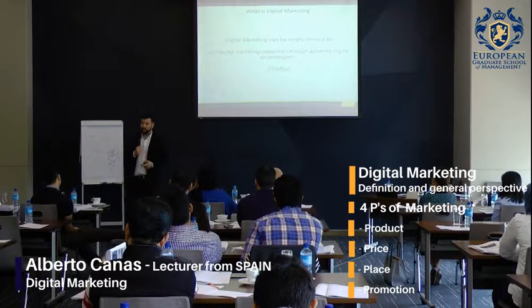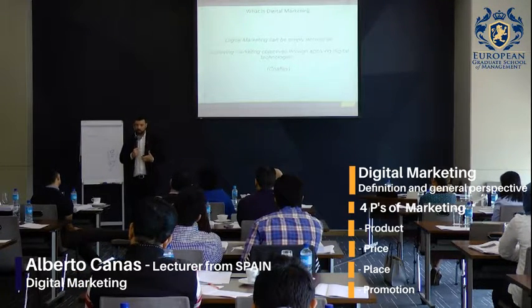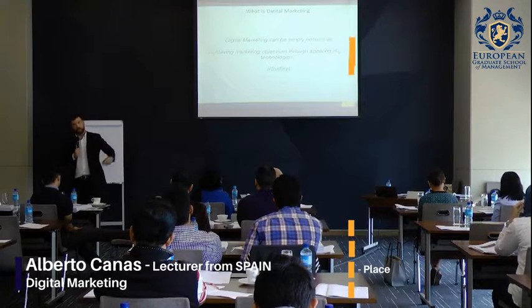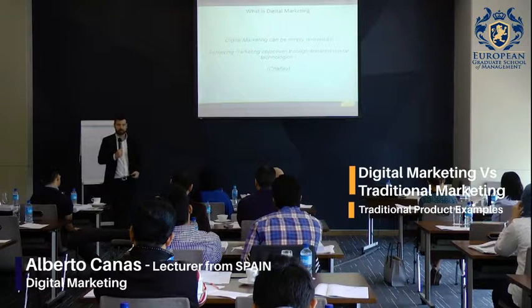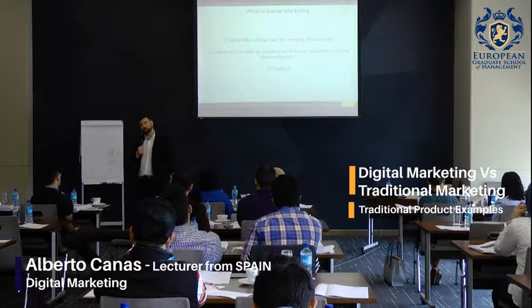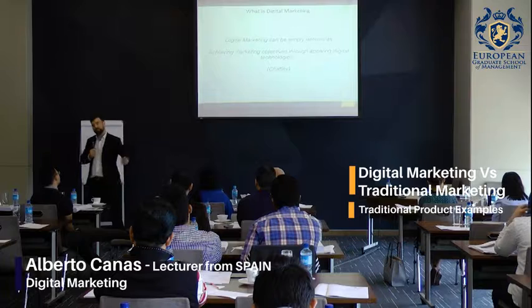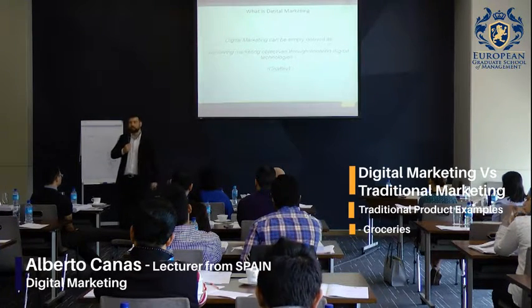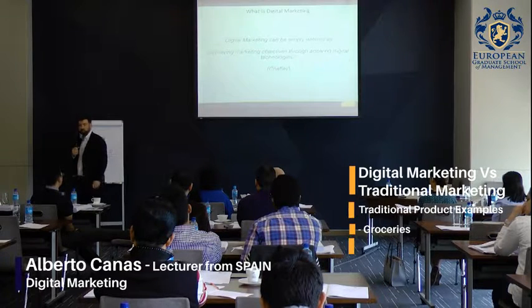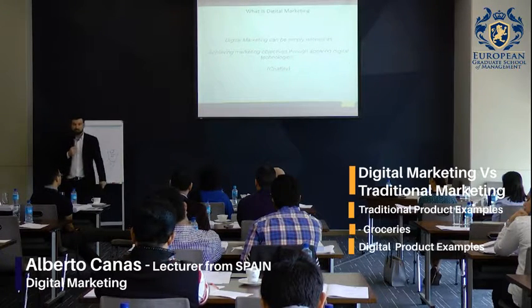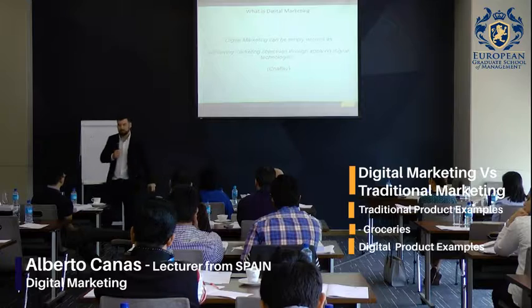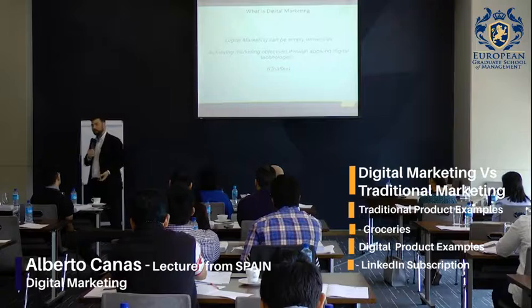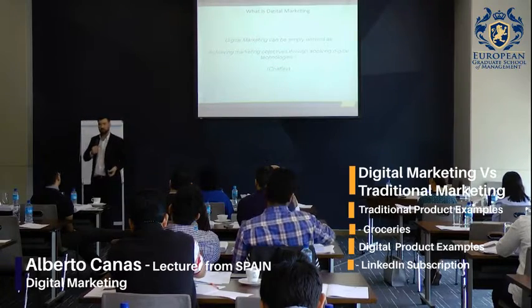Give an example comparing traditional marketing and digital marketing. Traditional marketing — product example: groceries, retail. If we're talking about digital, it would be through e-commerce, websites, online shops. Something like buying a LinkedIn subscription, for example.